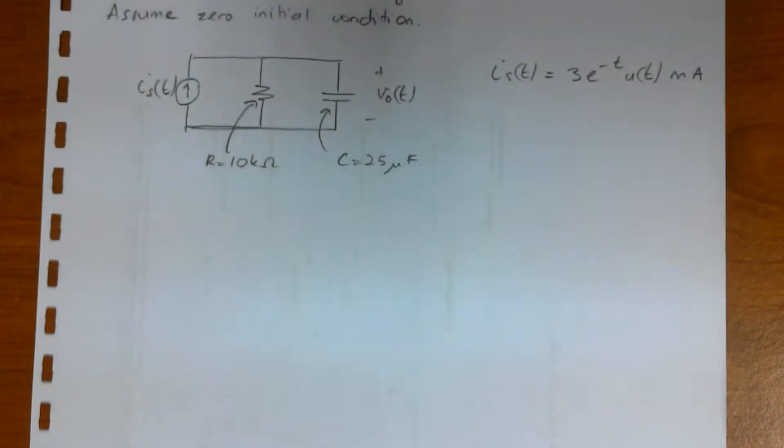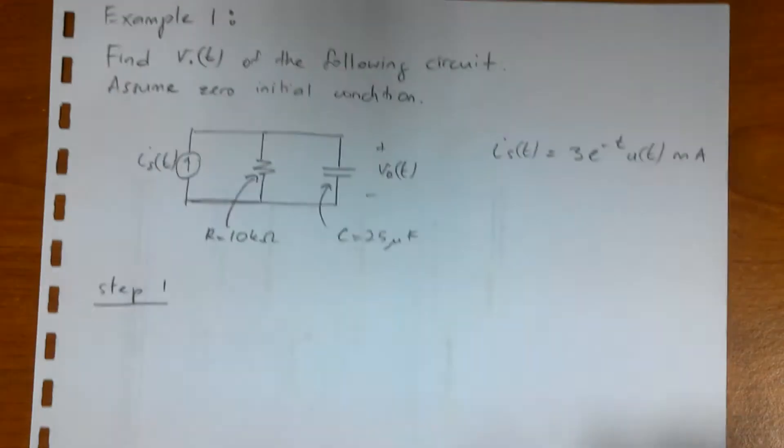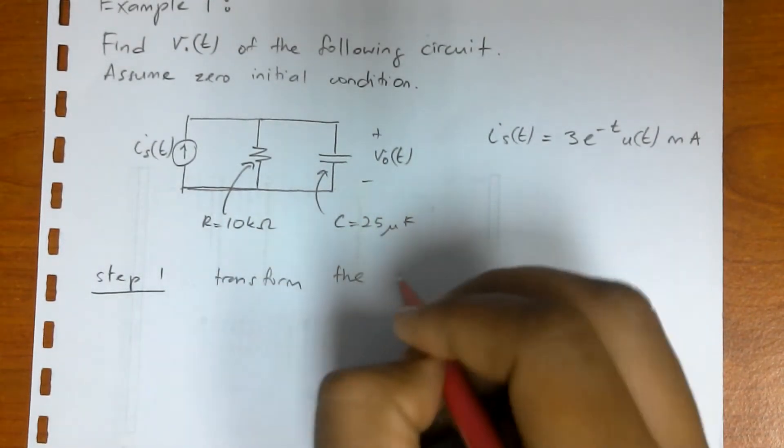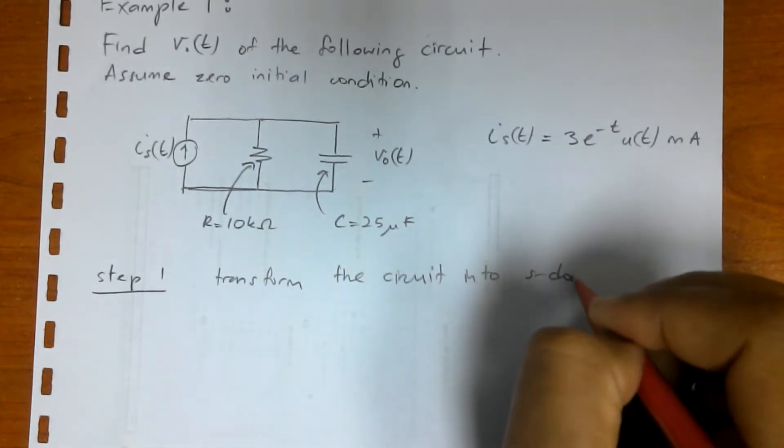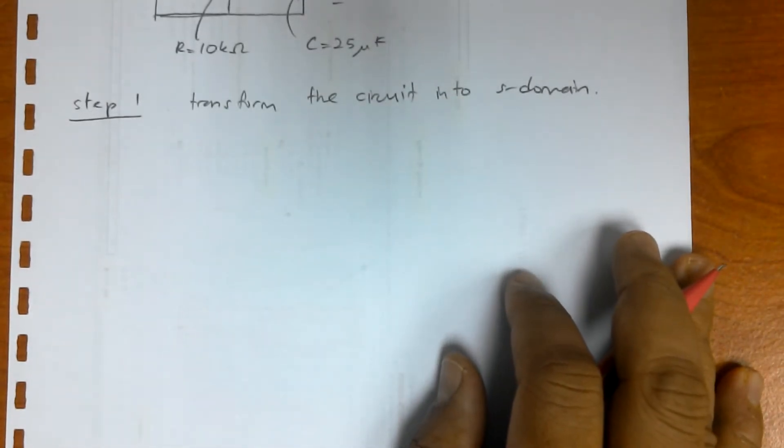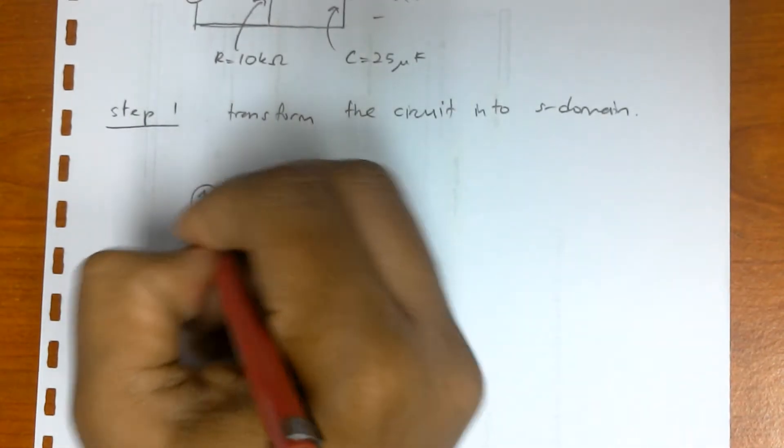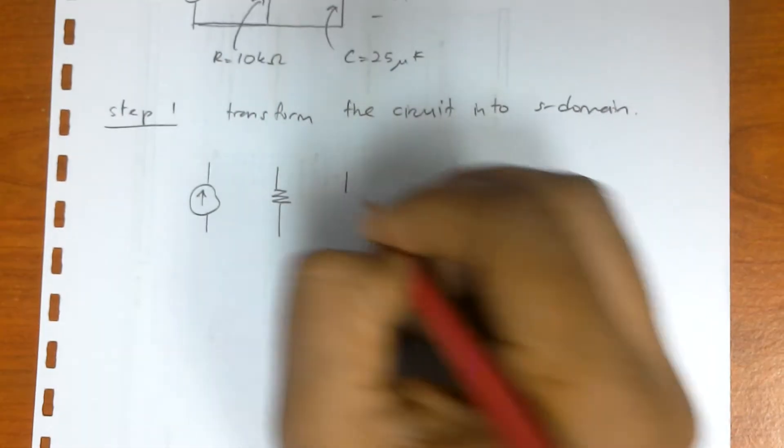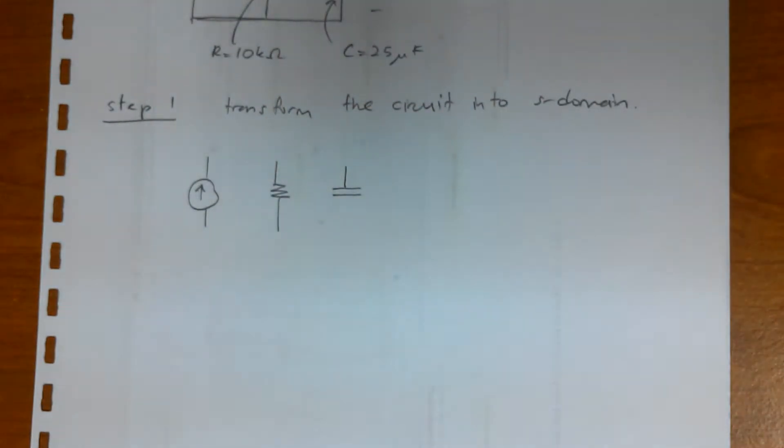So the first step is to transform the circuit into S domain. Let's draw the circuit again. We have current source, we have resistor, and we have capacitor.